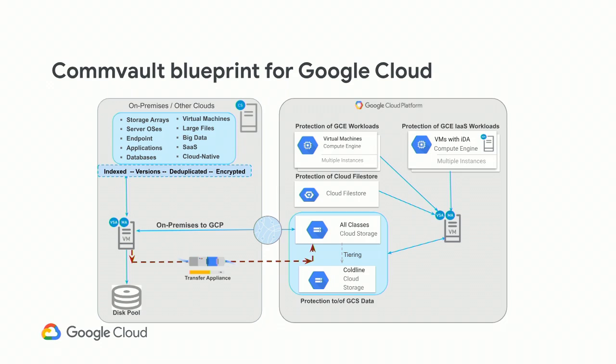Once you're in GCP, you have a number of options. You can protect GCE workloads, virtual machines, and applications and write to a GCS bucket. We also support file store, backing it up as though it were an on-prem NAS. Within GCS, you support tiering: write to standard tier first, then after a period of time move to cheaper storage like Coldline. And GCS protection means not only can you read data from GCS, but you can also write to GCS.